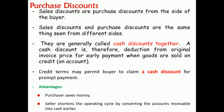Sales discount and purchase discount are two sides of the same transaction. Sales discount is from the seller's side; purchase discount is from the buyer's side. They are the same transaction viewed from different sides and are generally called cash discounts.